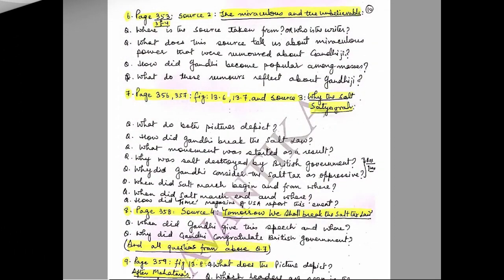Question 6: Page 353–354, Source 2 — 'The Miraculous and the Unbelievable.' Questions: Where is the source taken from, or who is the writer? What does the source tell us about the miraculous powers rumored about Gandhi? How did Gandhi become popular among the masses? What do these rumors reflect about Gandhi?